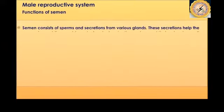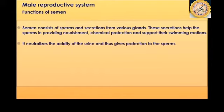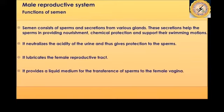Semen consists of sperms and secretions from various glands. These secretions help the sperms by providing nourishment, chemical protection, and support for their swimming motions. The secretion also neutralizes the acidity of the urine, protecting the sperms so they can remain alive for a long period. It also lubricates the female reproductive tract and provides a liquid medium for transfer of sperms into the vagina.